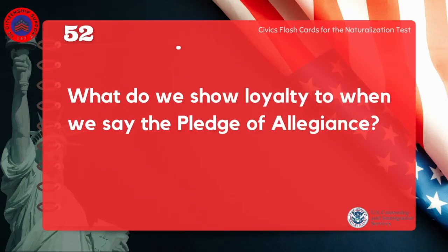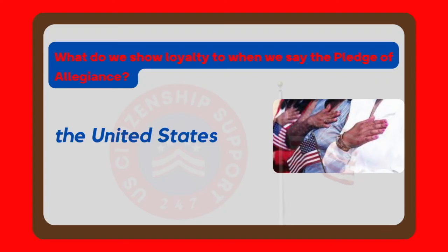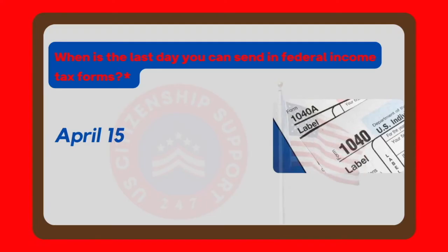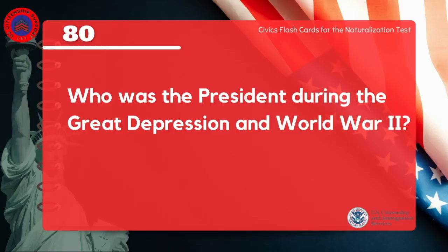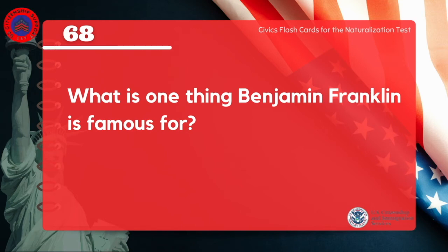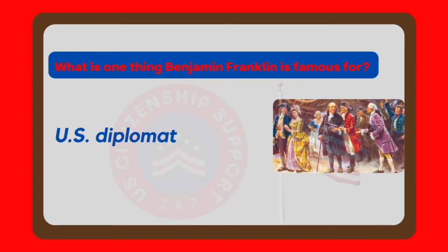What do we show loyalty to when we say the Pledge of Allegiance? The United States. When is the last day you can send in federal income tax forms? April 15. Who was the president during the Great Depression and World War II? Franklin Roosevelt. What is one thing Benjamin Franklin is famous for? U.S. diplomat.